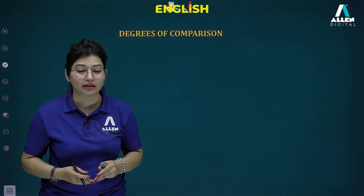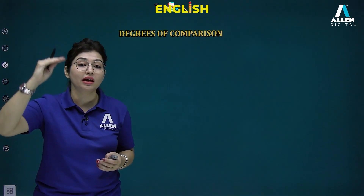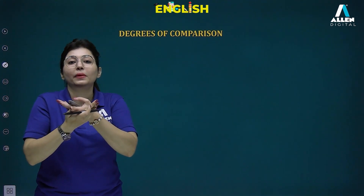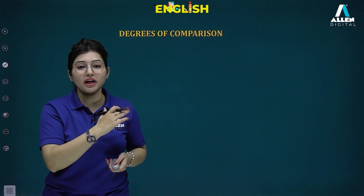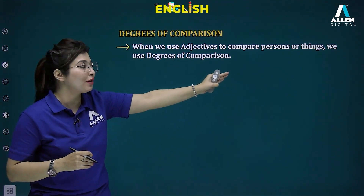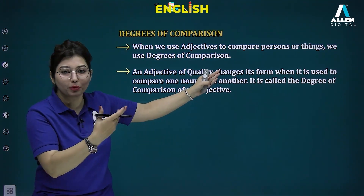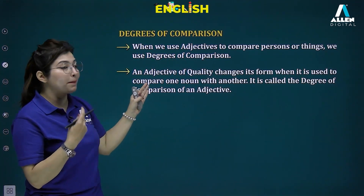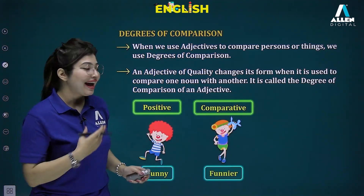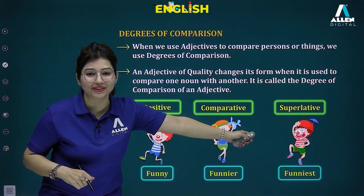Now let's look at degrees of comparison. Degrees means the level or extent to which something can go — like angles opening from zero to complete. In adjectives we have positive, comparative, and superlative degrees. When adjectives compare persons or things we use these degrees. For example, 'beautiful', 'more beautiful', 'most beautiful'. Positive is simple description, comparative compares two things, and superlative compares among more than two.